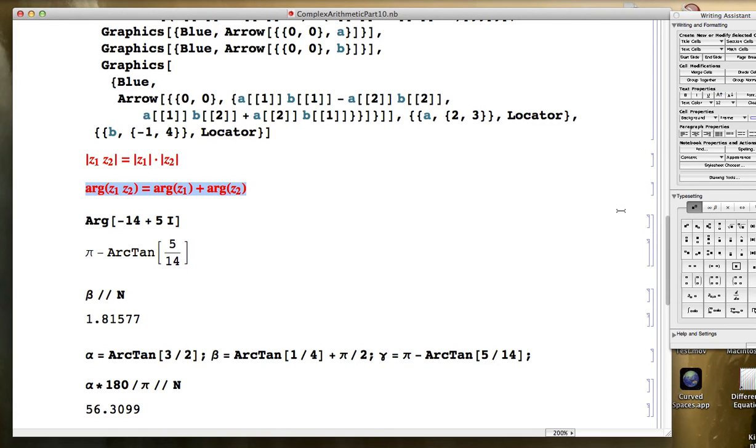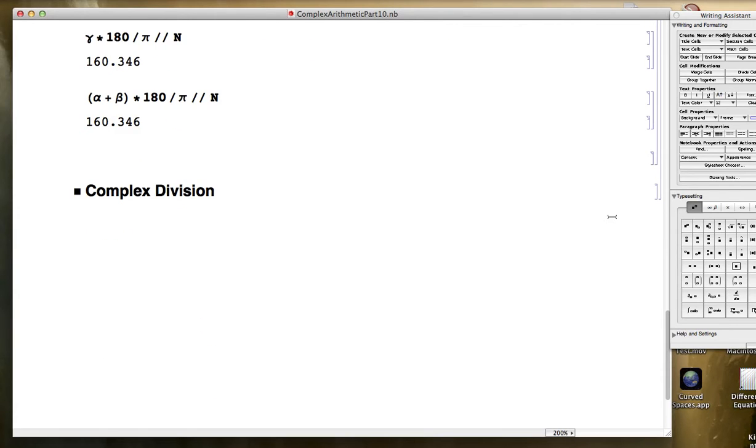We'll come back to worrying about that later. This time, we want to focus on complex division. And it's best in trying to motivate complex division if we start by trying to think about what it would mean for a complex number, a given complex number a plus bi, to have what's called the multiplicative inverse. Some other complex number, such that when I multiply it by that other complex number, I get the multiplicative identity, which is still 1, by the way, which would equal 1 plus 0i.